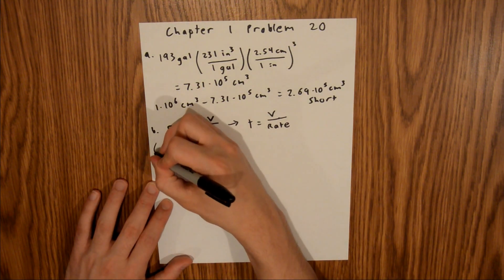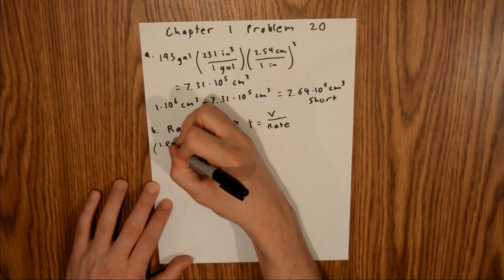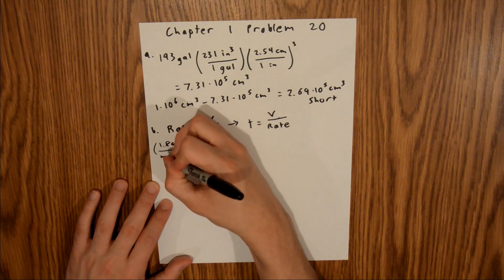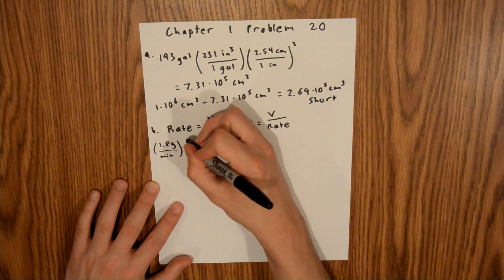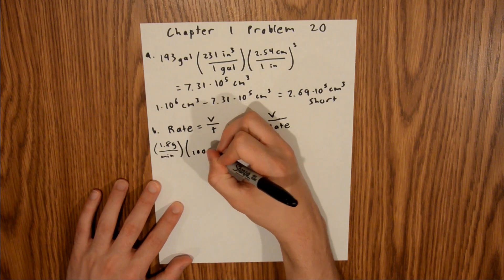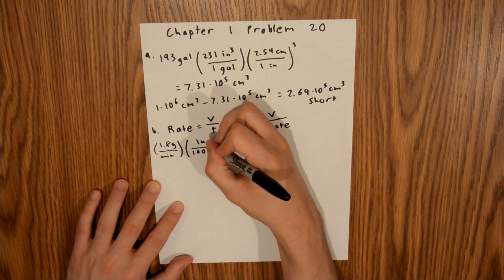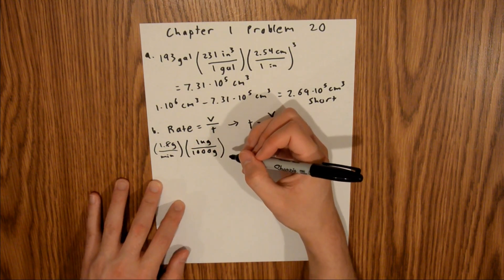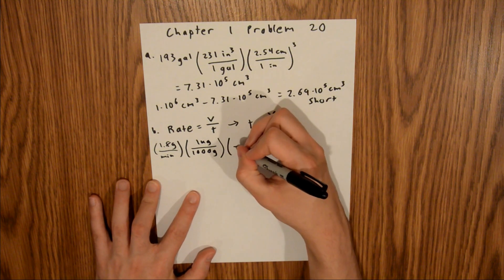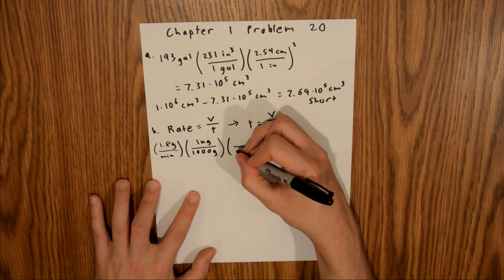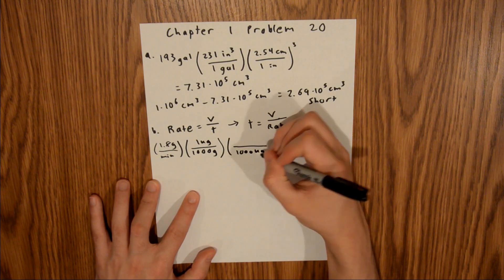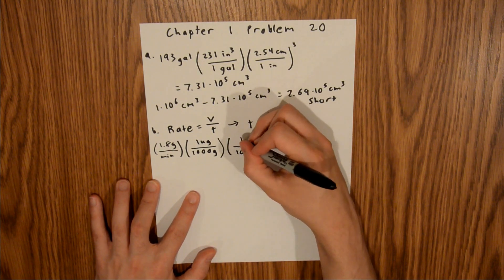And so we can start with the rate that we are given, which is 1.8 grams per minute, and we know that there are 1,000 grams in one kilogram, and now we can multiply that by our density in order to get this in terms of volume, and so that would be 1,000 kilograms in one meter cubed.